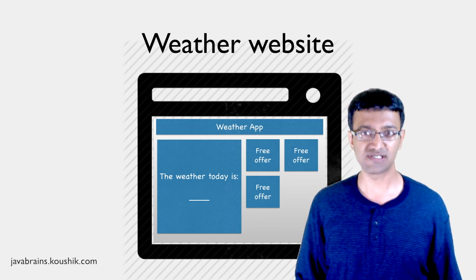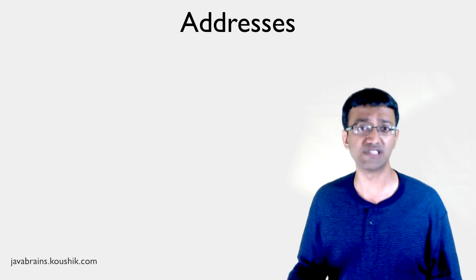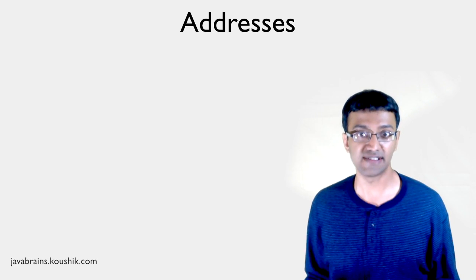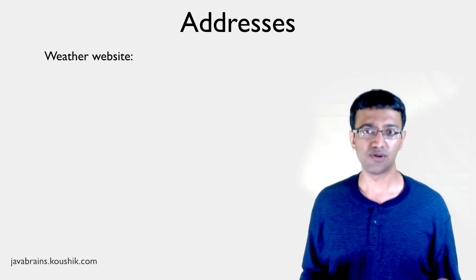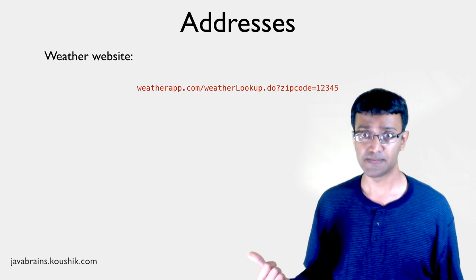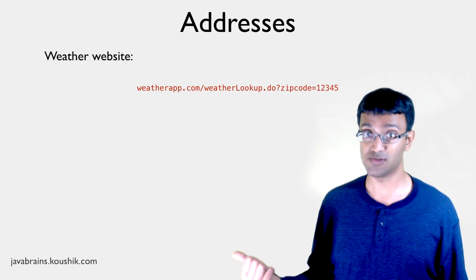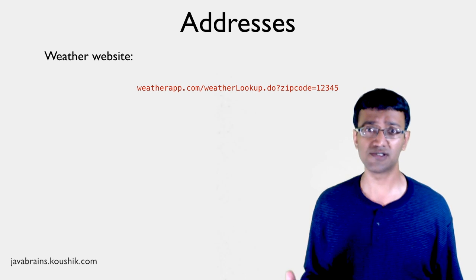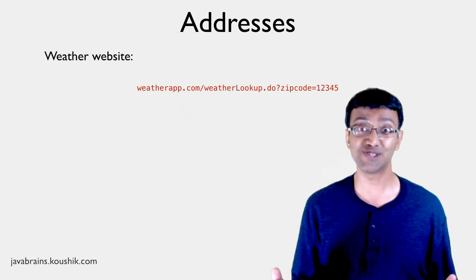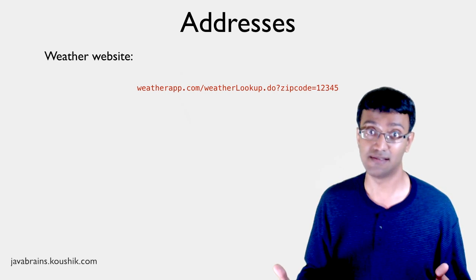But the REST API for a weather service probably has just the weather data in XML or JSON. Since APIs have addresses, an API designer needs to decide what those addresses should be. The practice in RESTful APIs is to have resource-based addresses. In the case of a weather website, a URI to look up zip code 12345 could be something like weatherapp.com/weatherlookup.do?zipcode=12345. This is a perfectly valid URI, but it's not resource-based — it's more action-based. It tells you that there is something called weatherlookup.do that takes the zip code as a parameter and does something.